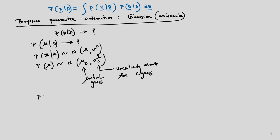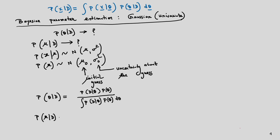The initial guess is mu_0, and sigma_0^2 represents the uncertainty about the guess. We need to determine p(theta|D), which here is p(mu|D). Using Bayes' law: p(mu|D) is proportional to p(D|mu) times p(mu), divided by the normalizing integral.